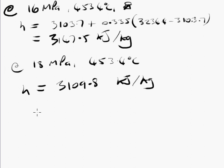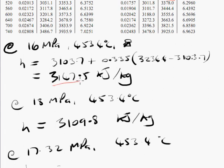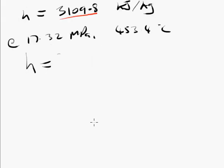Finally, we need to interpolate between our two pressures. So at 17.32 MPa and 453.4 Celsius we will have an h of - we use the two values now that we've just found, that value at 16 MPa and that value at 18 MPa. 3147.5 plus - we already worked out the fraction here in the previous example. We decided that 17.32 MPa was 0.66 of the way from 16 to 18 MPa. So it's 0.66 times 3109.8 minus 3147.5.